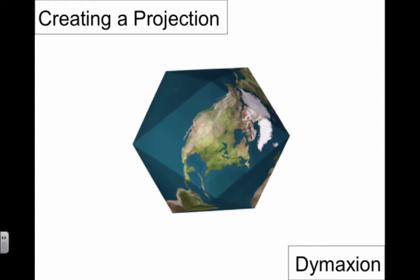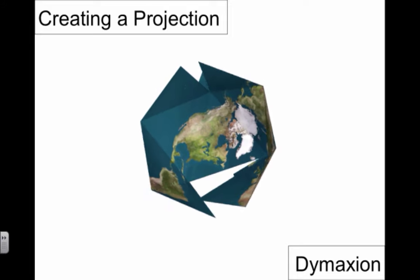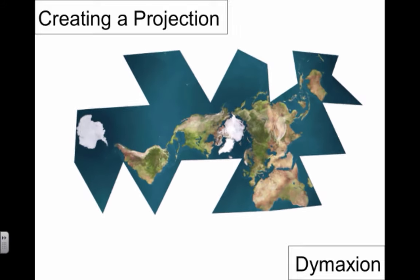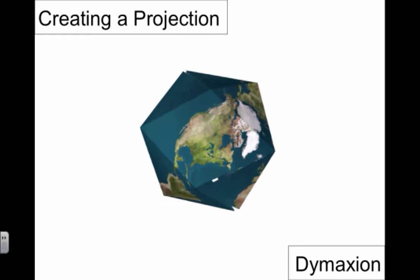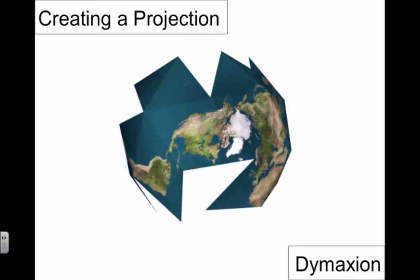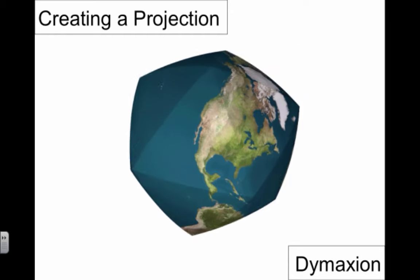This animated image shows how a three-dimensional sphere is flattened out into two dimensions. This is a Dymaxion projection, and its purpose will be explained shortly.